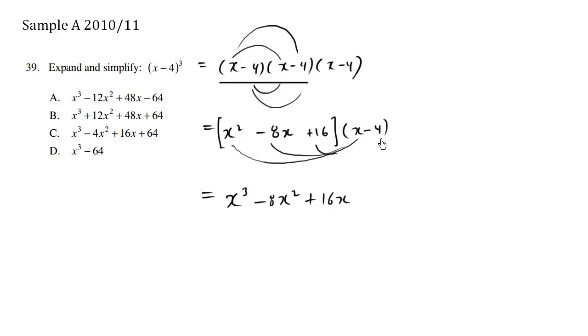We have the second part, negative 4 times x squared is negative 4x squared. negative 4 times negative 8x, this is going to be a positive 4 times 8, 32. And then it's going to be an x.